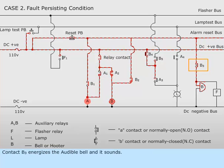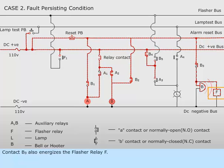Contact B sub 3 energizes the audible bell and it sounds. Contact B sub 3 also energizes the flasher relay F.